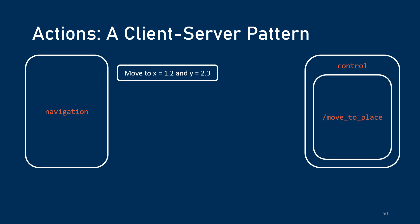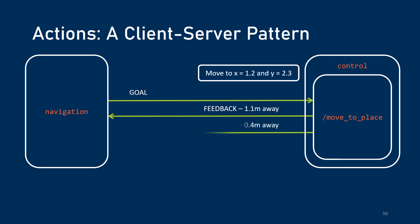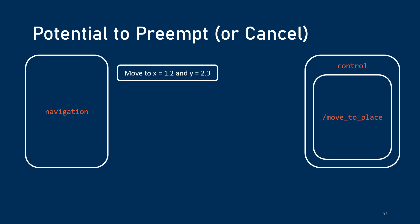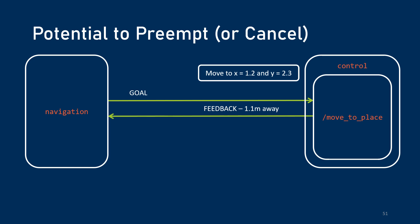Let's say you are navigating. You've got a navigation program saying, all right control, let's move to x equals 1.2 and y equals 2.3. It sends a goal, tells you how many meters you are away, and then sends you a result that you have moved to the requested position. The main difference from a service is the possibility of feedback. But there's also another major difference: the potential to preempt or cancel the action. Maybe you're on the move and something tells your navigation software there's an obstacle in the way that wasn't there before — it can send a stop command and stop the action in its tracks.